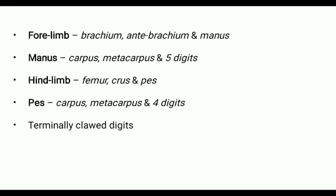The manus consists of three parts: carpus, metacarpus, and five digits — also called wrist, palm, and fingers respectively.